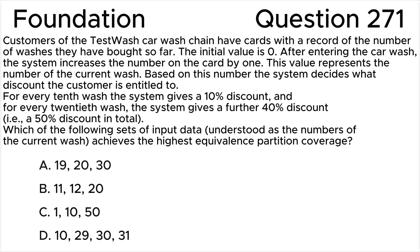Based on this number, the system decides what discount the customer is entitled to. For every 10th wash, the system gives a 10% discount. And for every 20th wash, the system gives a further 40% discount, i.e. a 50% discount in total. Which of the following sets of input data, understood as the numbers of the current wash, achieves the highest equivalence partition coverage?